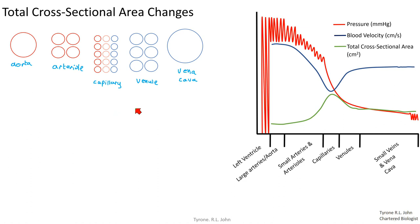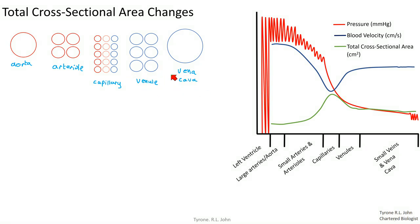Cross-sectional area also relates to blood velocity: from venule to vena cava there is a slight increase in cross-sectional area which aids blood velocity because there is less friction — these vessels are all bigger than the capillaries. In the capillary there is high friction; in the venule friction is a bit lower because the vessel is slightly bigger; and in the vena cava, with its massive lumen, the frictional forces are very very low. That is why you get a slightly increased blood velocity in these vessels.